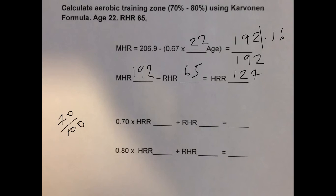So 0.70 times the heart rate reserve of 127 plus the resting heart rate of 65 gives you an answer of 153.9, which we can round to 154 beats per minute.